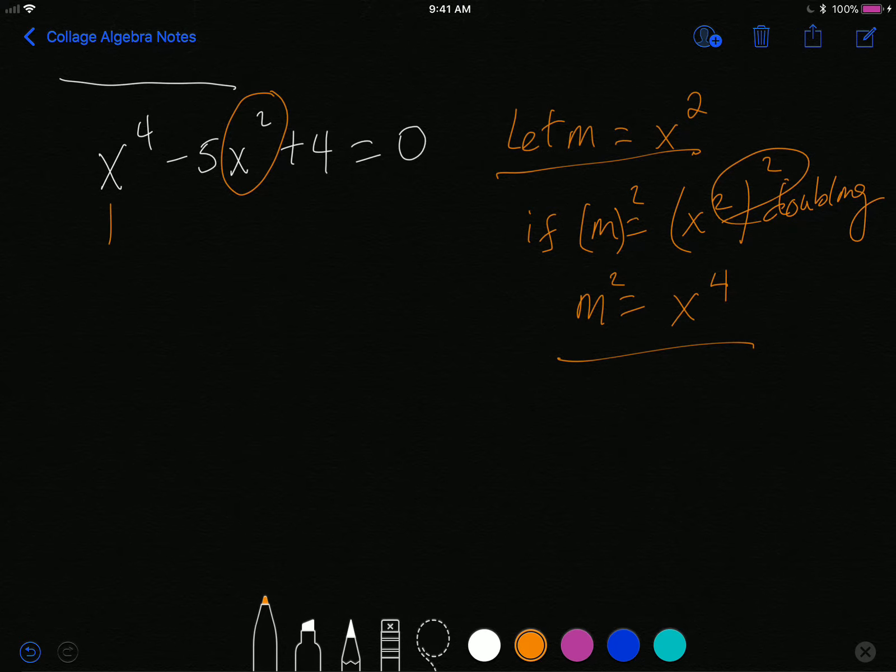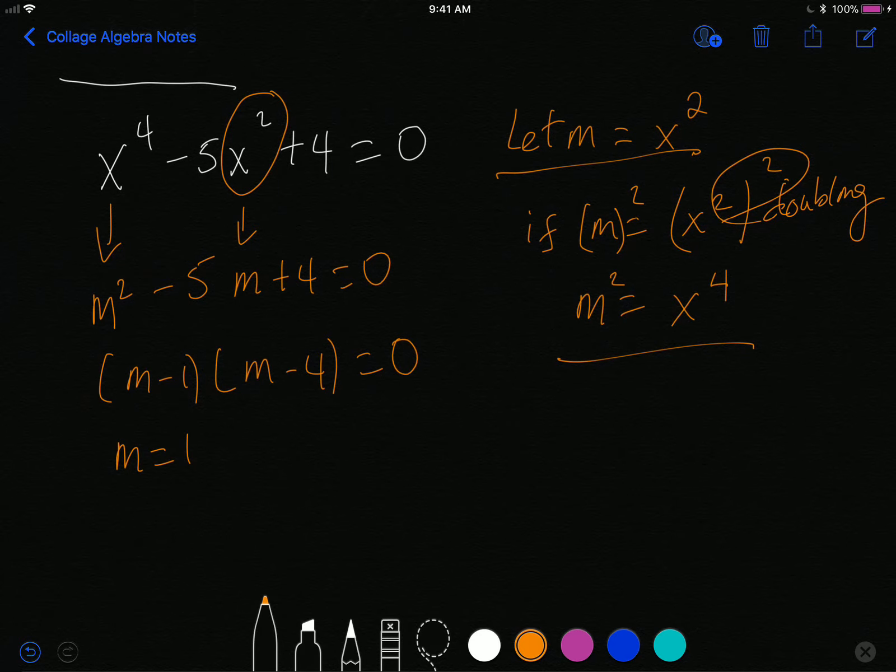Instead of writing x to the fourth power, I can write m squared. Instead of writing x squared, I can write m. And now I have lowered the powers. This is now an equation of quadratic type. Now I can solve. So factoring this right here is m minus 1 times m minus 4 equals 0. And so then I will get that m is 1. And I will get that m is 4.